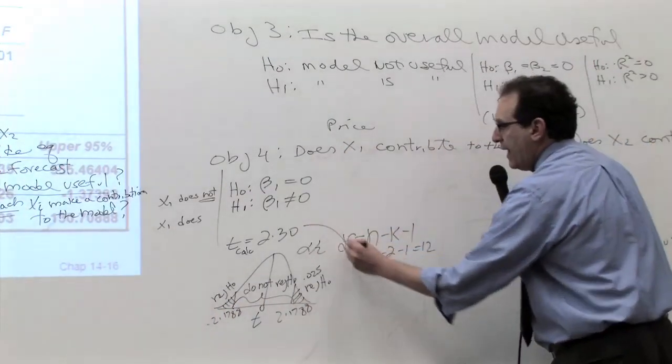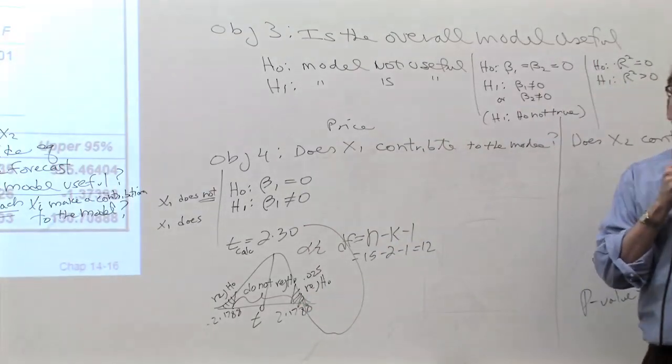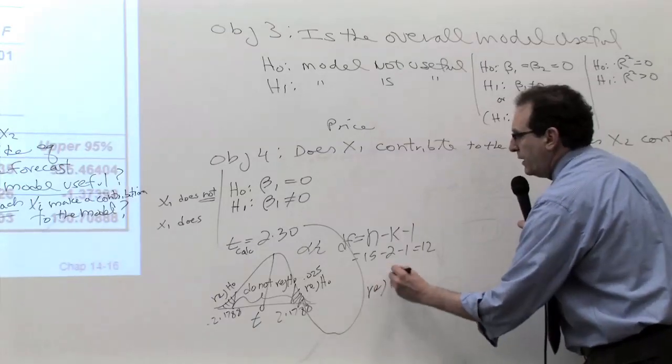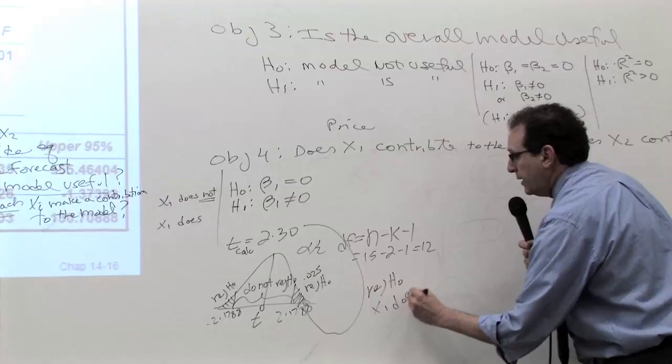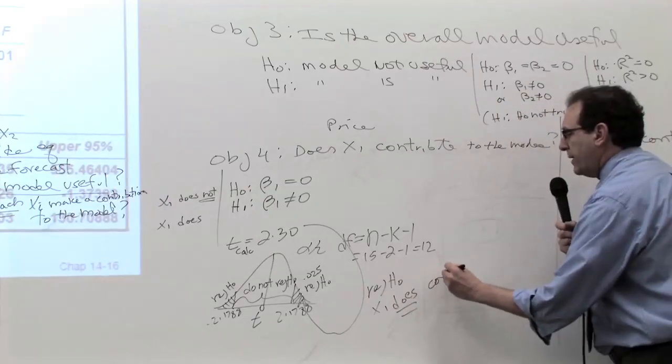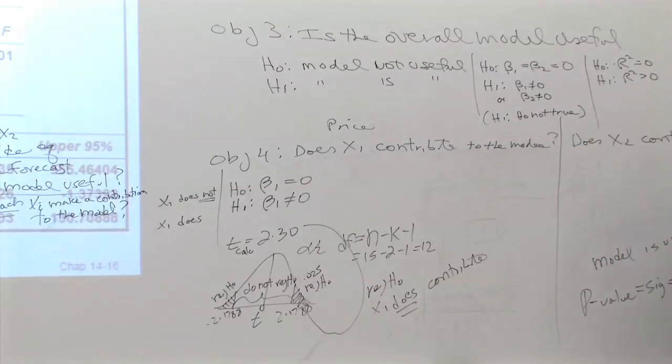And moving on to step number four, you take this number, and where is 2.3? Is it in the reject region? Yes, it's bigger than 2.17. Therefore, the answer is to reject H0, and X1 does contribute to the model. Okay? That's the answer now.